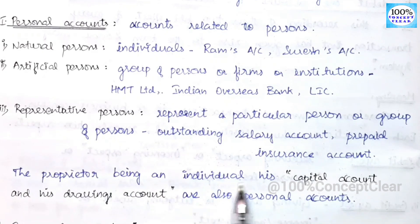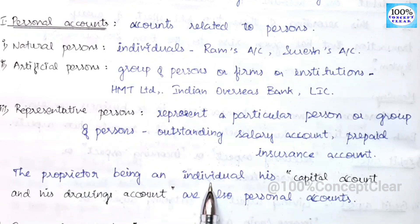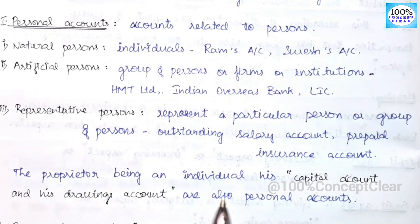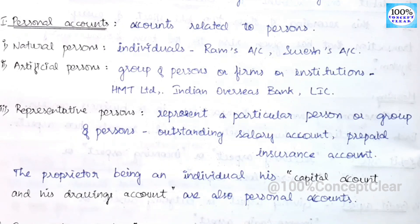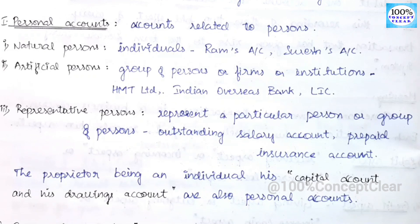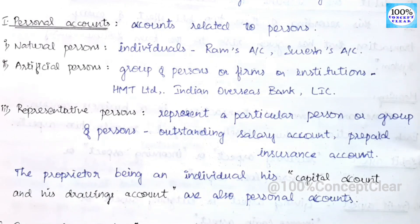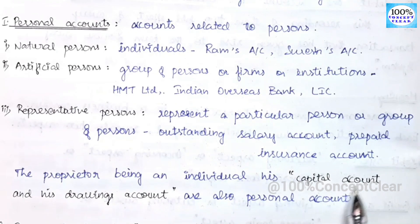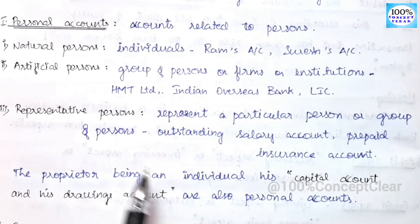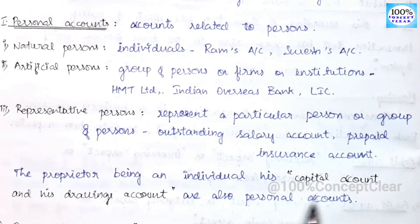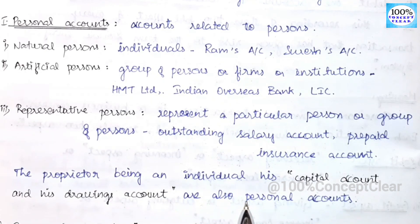The proprietor being an individual, his capital account and his drawing account are also personal accounts. In a business concern, we consider the proprietor as an individual person — this is an accounting principle. That is why the owner's accounts are personal accounts.